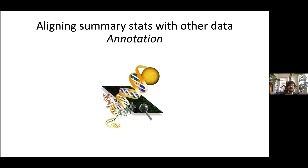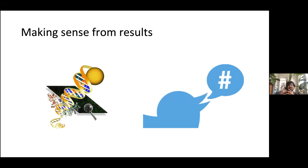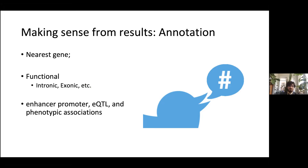Making sense of summary statistics from a genetic epidemiologist's standpoint almost always involves annotation — marking information along each SNP. This is analogous to Twitter hashtags: you're hashtagging SNPs for nearest gene, functional consequence (intronic, exonic, etc.), enhancer-promoter relationships, expression QTLs, and even other phenotypic associations from the GWAS catalog. It's a simple and straightforward way to extract information from the genome.